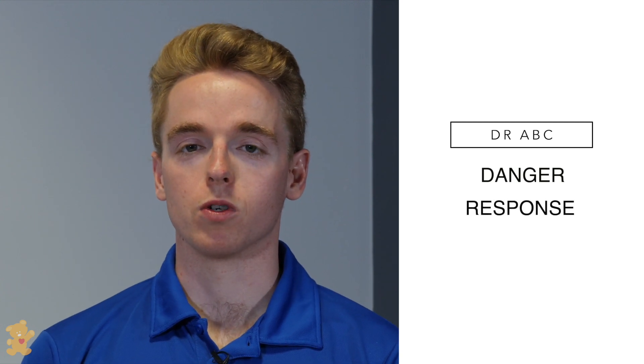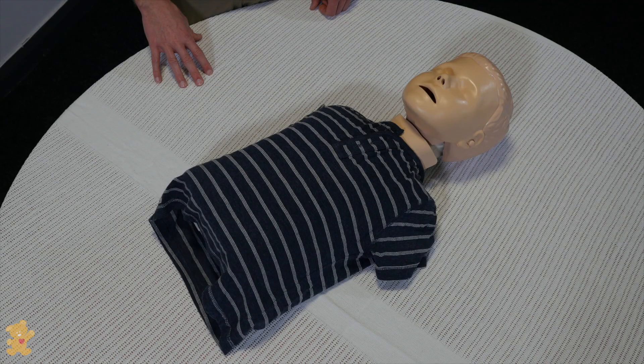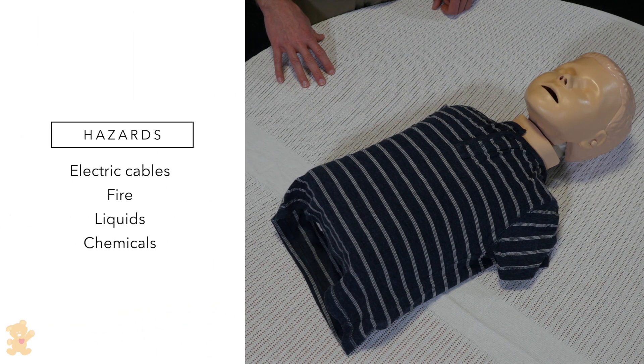This system is easily remembered by the acronym Dr ABC. D is for danger, R for response, A for airway, B for breathing, and C for circulation. So the first part of the primary survey is checking for danger.